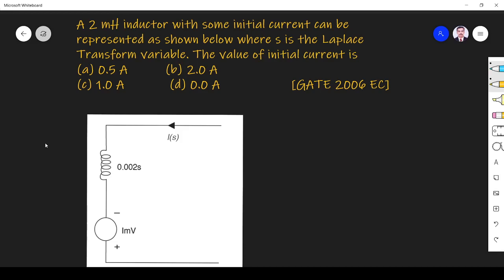The value of initial current is option A 0.5 Ampere, option B 2 Ampere, option C 1 Ampere, option D 0 Ampere. So they have given inductor value with the Laplace transform equation and some initial current.